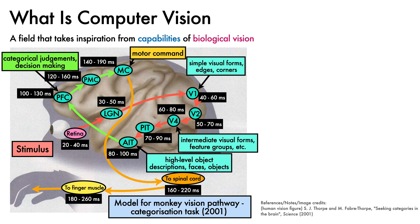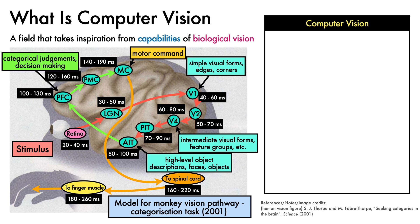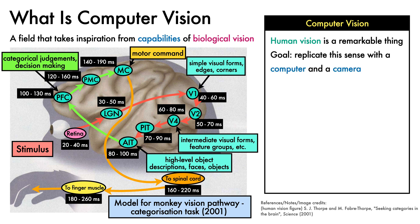This glorious orchestra of information processing can take place in as little as 180ms, but more typically takes up to 260ms. Computer vision starts from the observation that biological vision, and human vision in particular, is a remarkable thing. And wouldn't it be great if we could replicate this form of sensory perception using a computer and a camera? Clearly, the answer is yes. But it turns out to be very difficult.